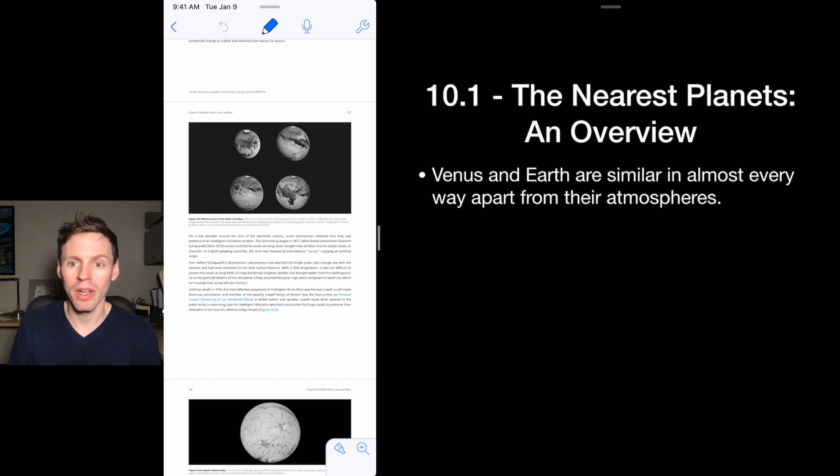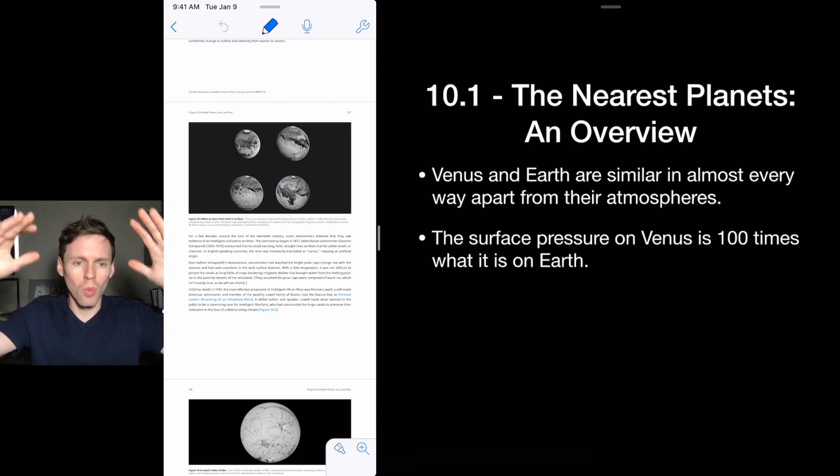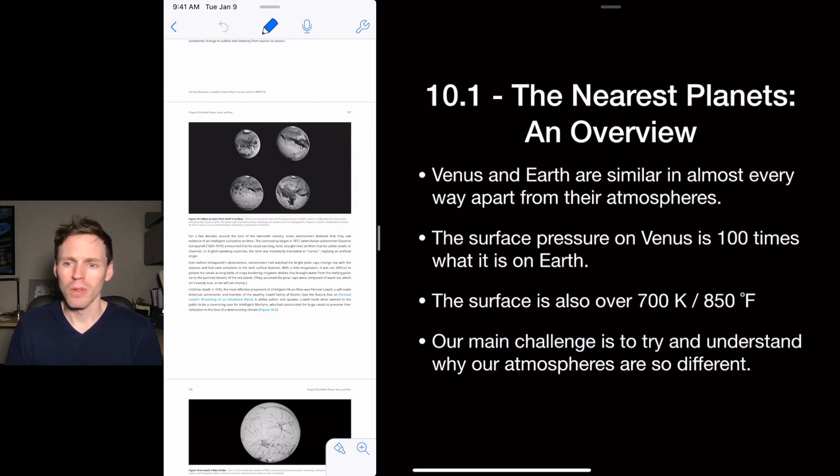Venus and Earth, they're similar in almost every way apart from their atmospheres. The surface pressure on Venus is about 100 times that on Earth because there's so much gas, so much atmosphere, the weight of it pushing on you is 100 times what it is here on Earth. The surface is over 800 degrees Fahrenheit or 700 Kelvin, so it's very, very hot all the time. What do you cook pizza at? Like 300 degrees, 325, 350, maybe 450 if you got some crazy frozen pizza. So that's twice the temperature of a pizza oven all the time on the surface of the planet.